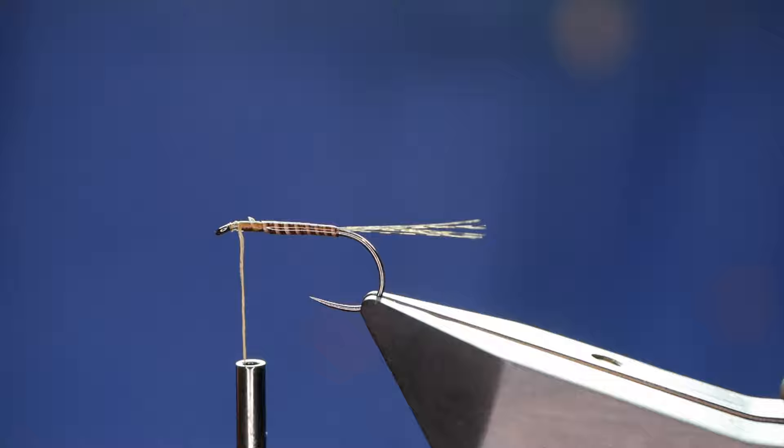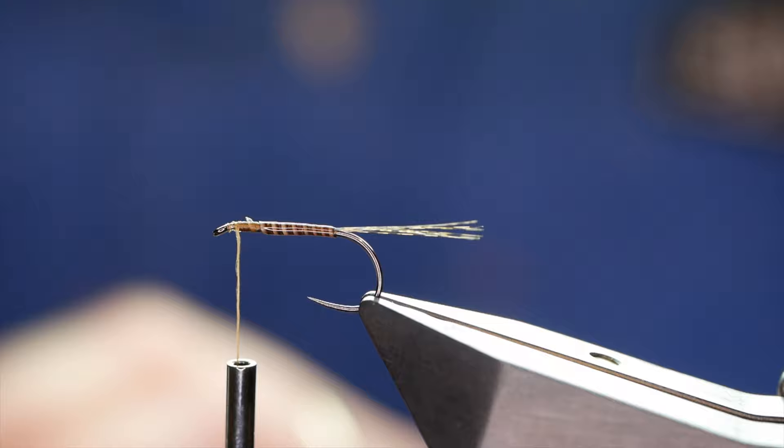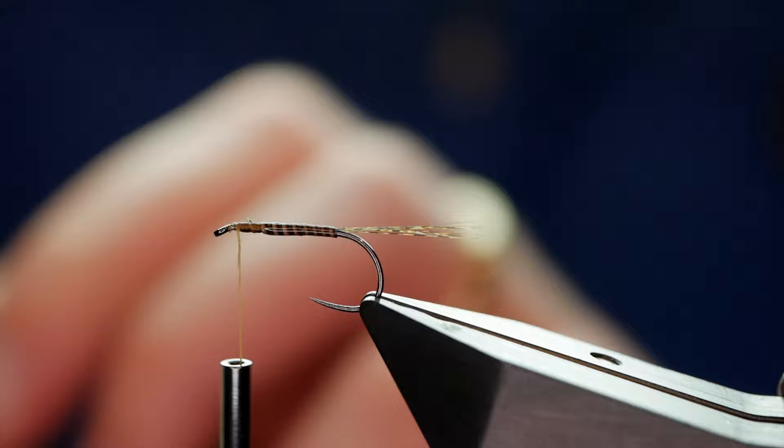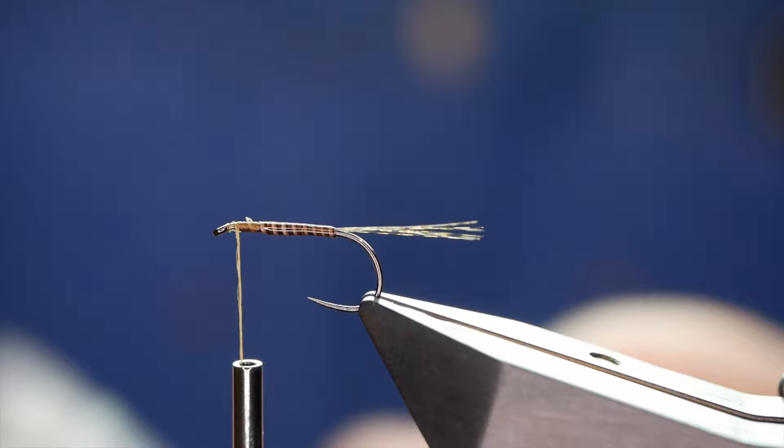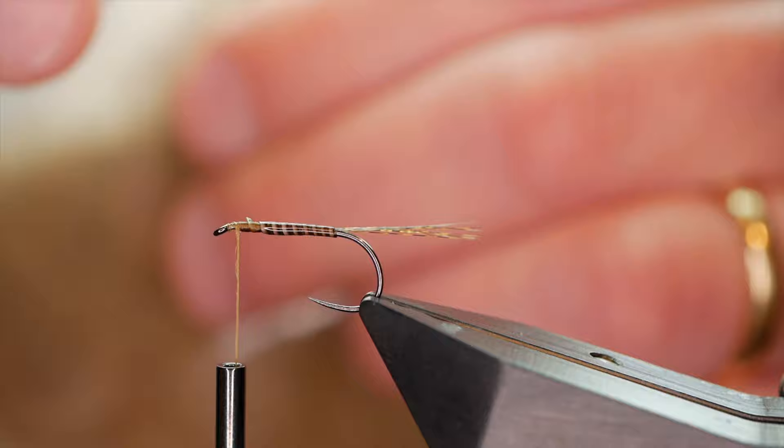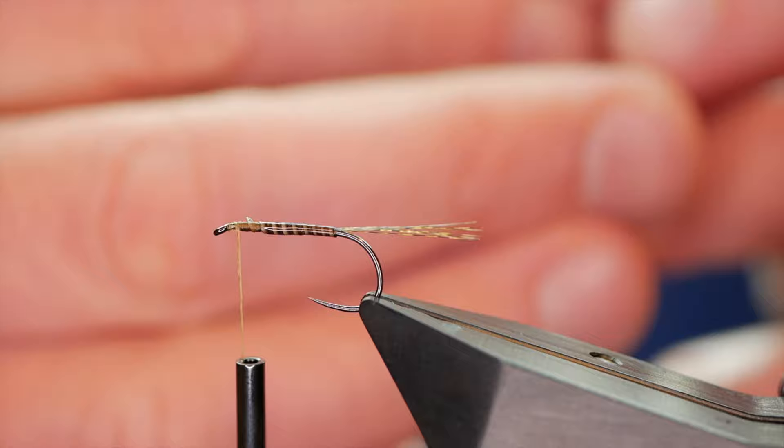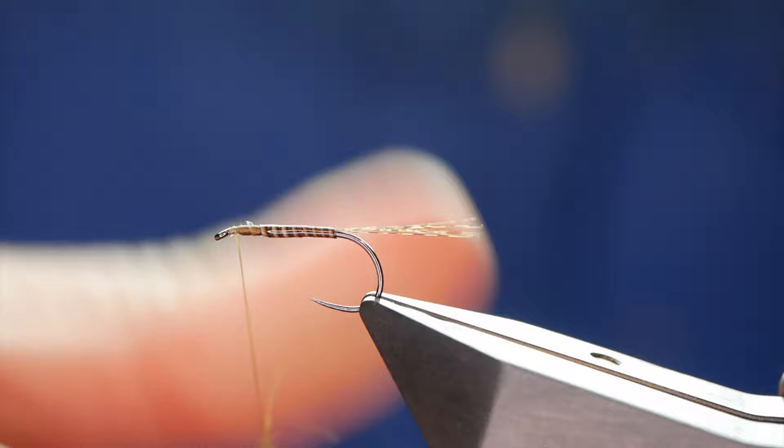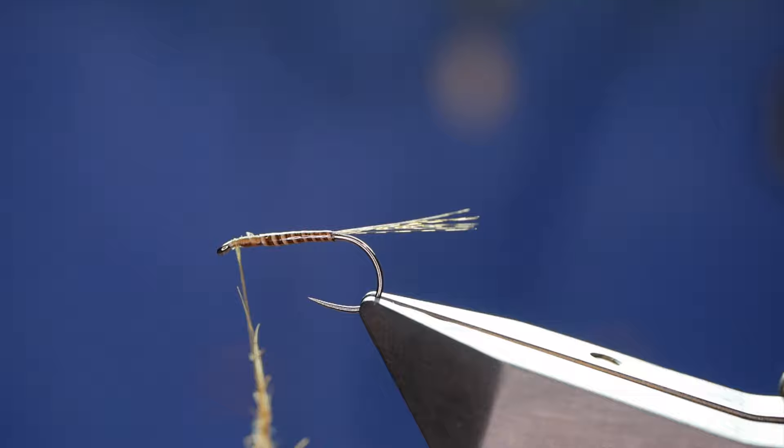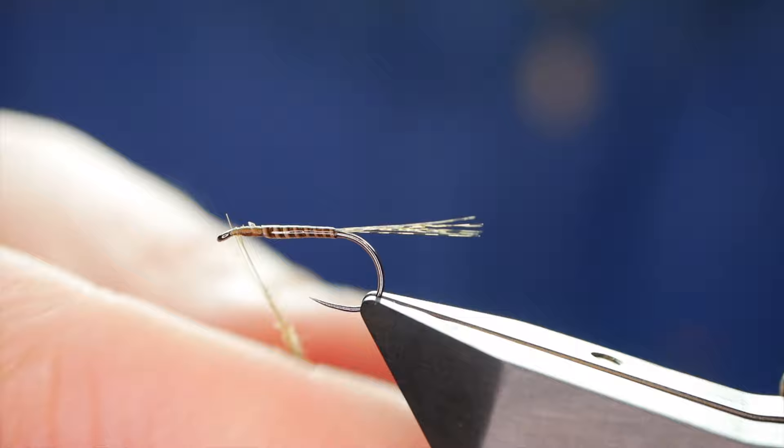So I'm content that that is cured. And I'm going to add my thorax. Now what I'm using is some Hanak dubbing. Hanak competition it is. And what do they call this? It's called Brown Pardo. And it's a really spiky rough dubbing if you like. Which gives a great impression of legs. So I've taken a little pinch out the packet. And you don't need very much for this. And then I'm going to try and dub it onto the thread. I don't want to crush it if you know what I mean. I want to keep it nice and rough.